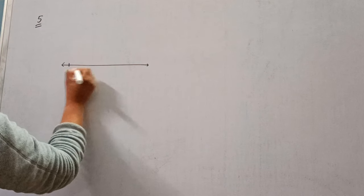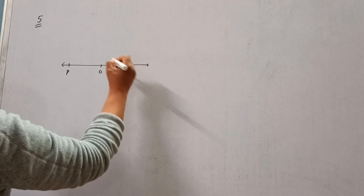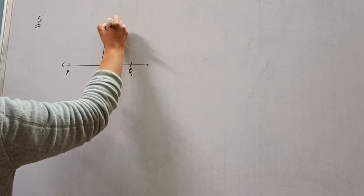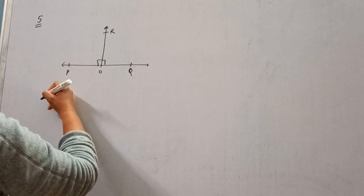figure, POQ is a line. Ray OR is perpendicular to PQ. This is perpendicular, okay, OR perpendicular to PQ.